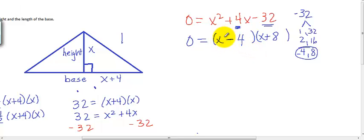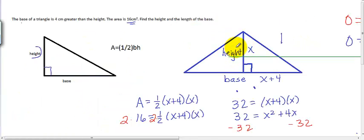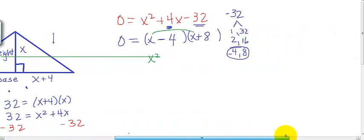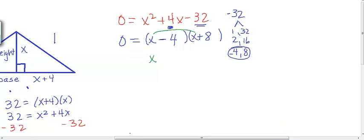So here, I'm going to FOIL. So first times first would give me x squared. Outer times outer would give me 8x. Inner times inner would give me negative 4x. Those add up to a positive 4x in the middle. And then last times last would give me negative 32. So you can see that x minus 4 times x plus 8 is x squared plus 4x minus 32.